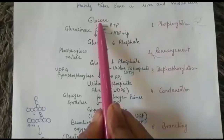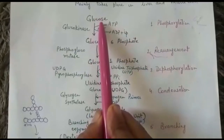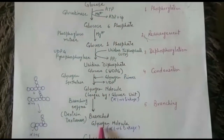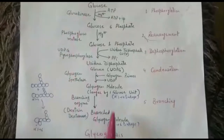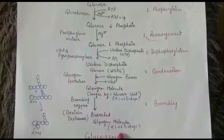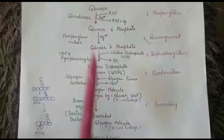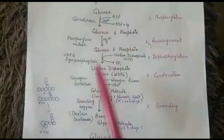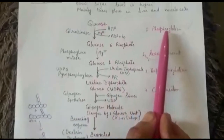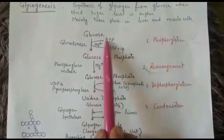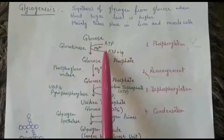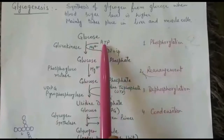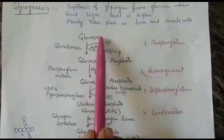You have studied the structure of glucose, which is a monosaccharide having six carbons, and the structure of glycogen, which is made up of nearly 30,000 glucose units held by alpha-1,4 and alpha-1,6 linkages. Keep these structures in mind while studying this process. First, glucose undergoes phosphorylation — phosphate is taken from ATP, which after giving its phosphate changes into ADP, and this phosphate attaches to glucose at the sixth position, forming glucose-6-phosphate.